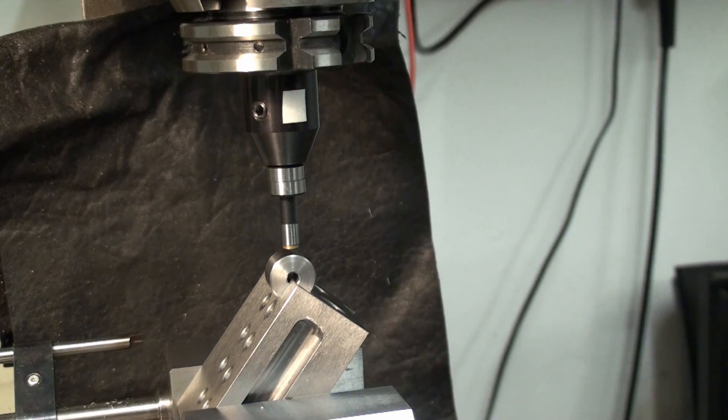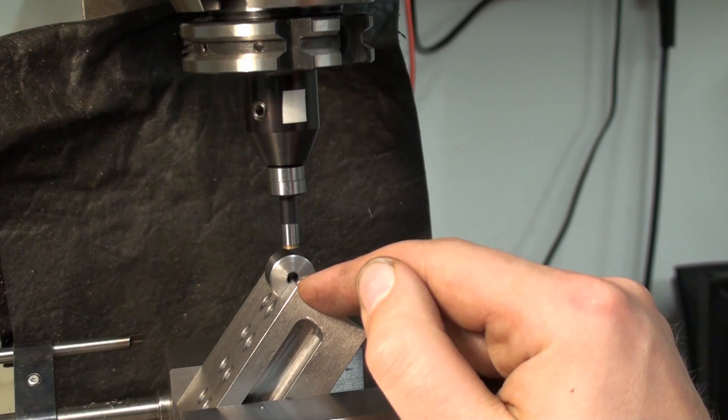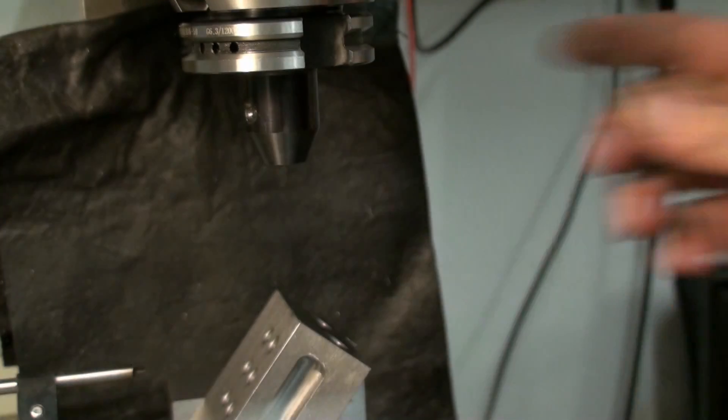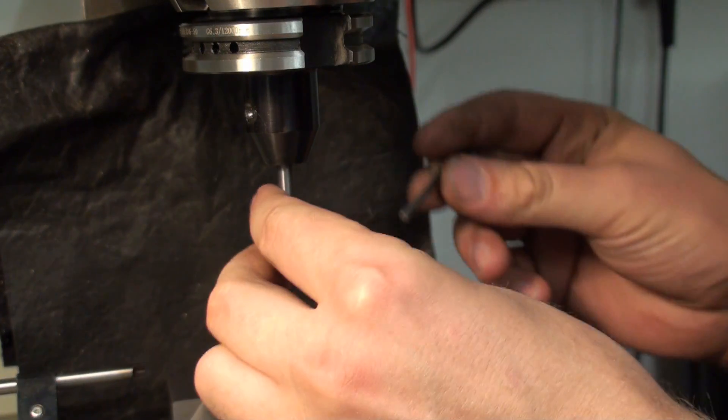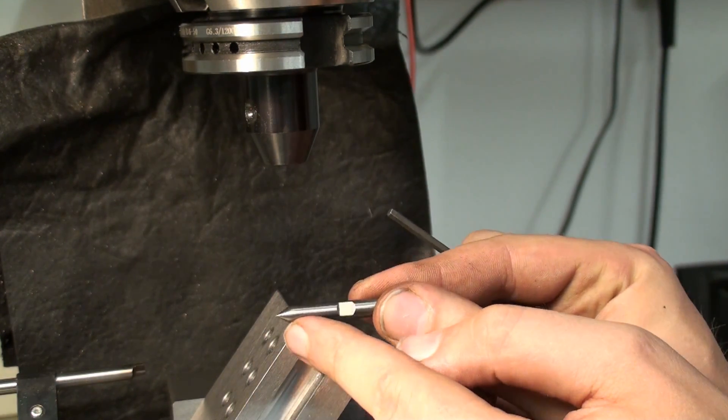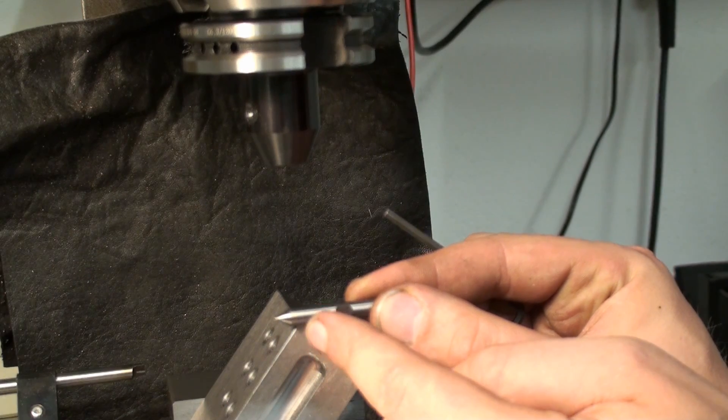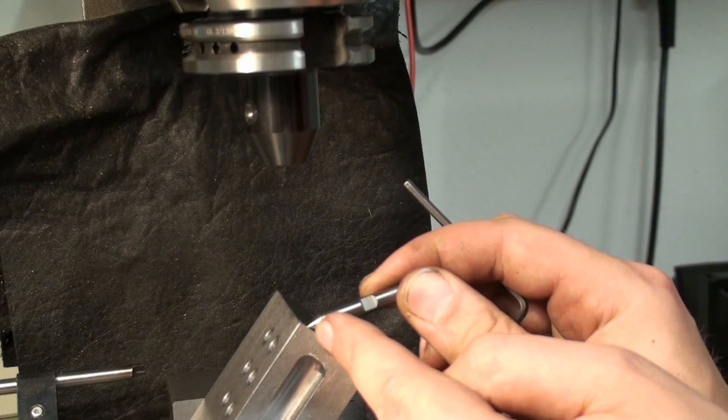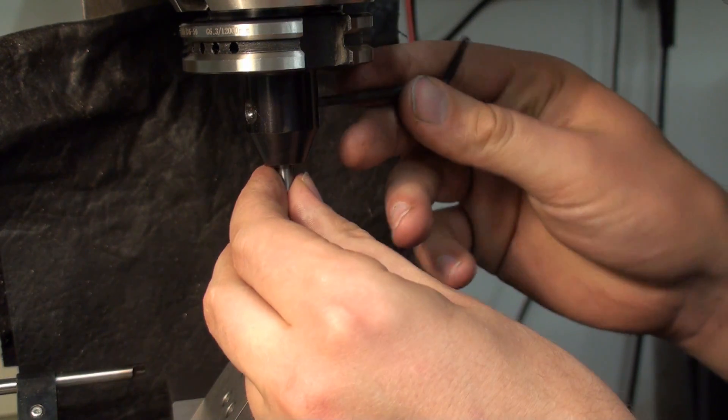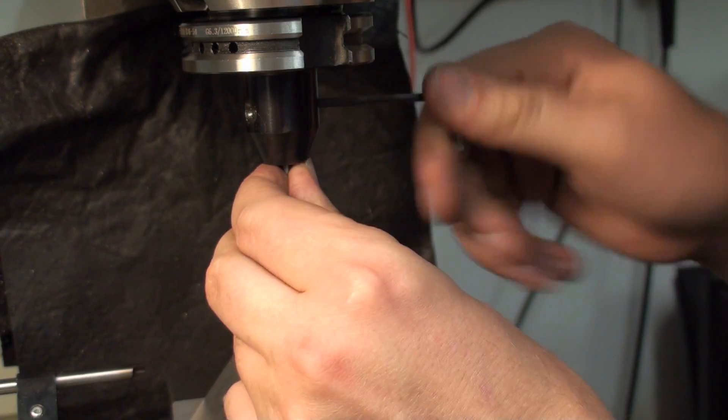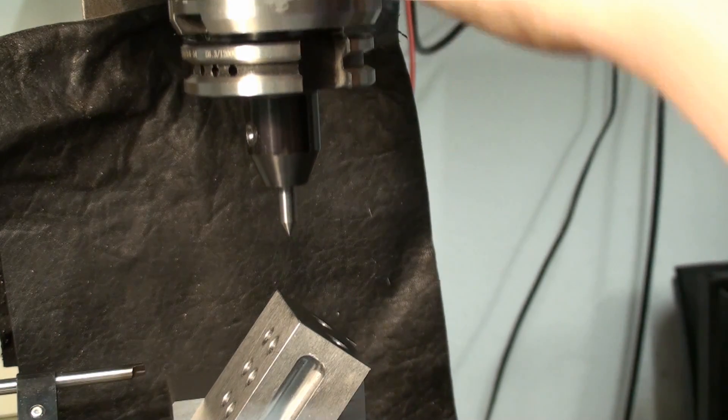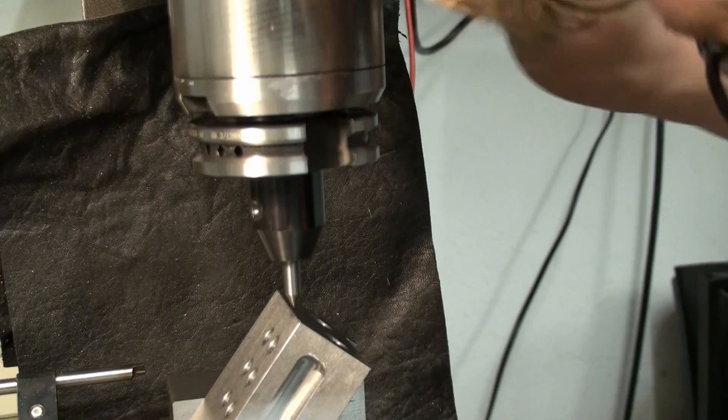Okay, now we should be right over the center of the edge. For double checking, we can pull out the edge finder and use a carbide end mill. I ground a 60 degree point on it and that's what I use to align workpieces by eye. Sometimes that's the only way to align something. And now we just go down onto our edge.